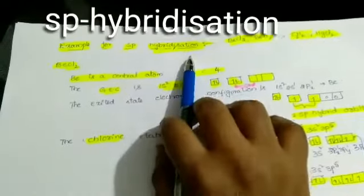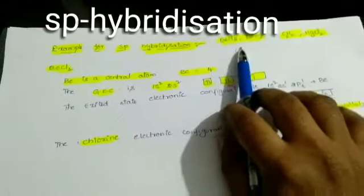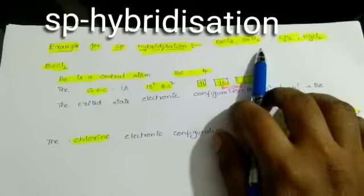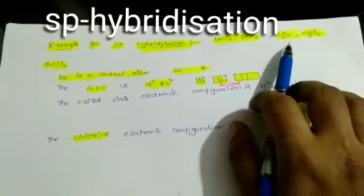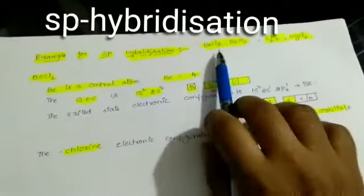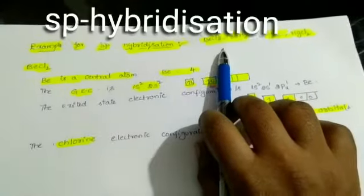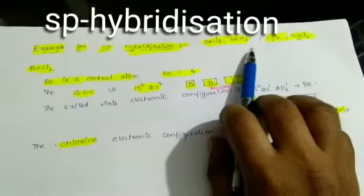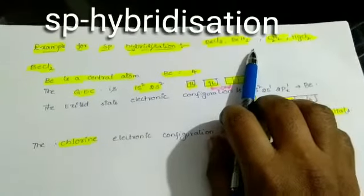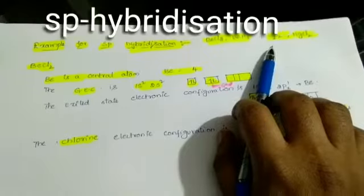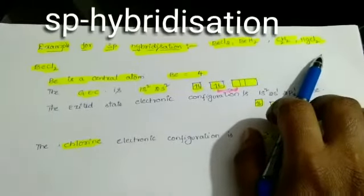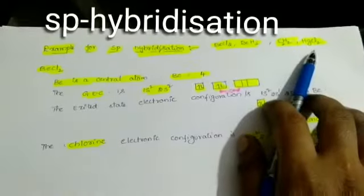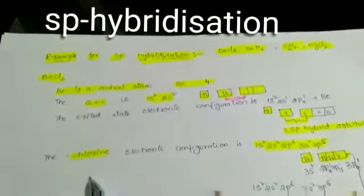SP hybridization is explained with examples such as BeCl₂ (beryllium chloride), BeH₂ (beryllium hydride), C₂H₂ (acetylene), and HgCl₂ (mercury chloride). These are all examples of SP hybridization.